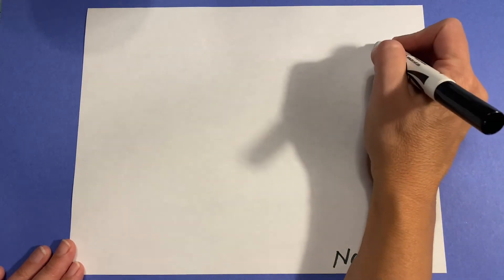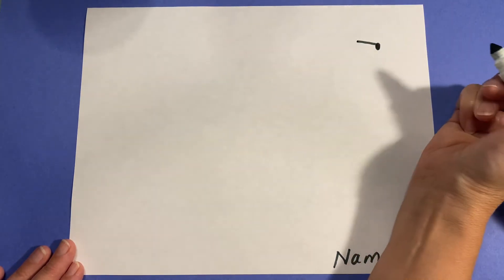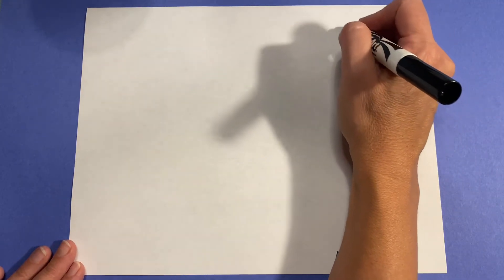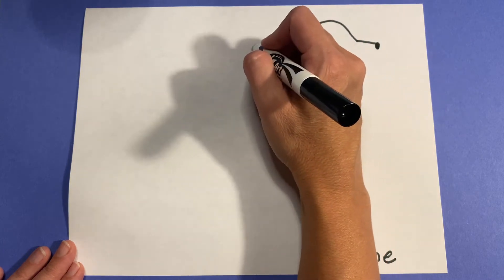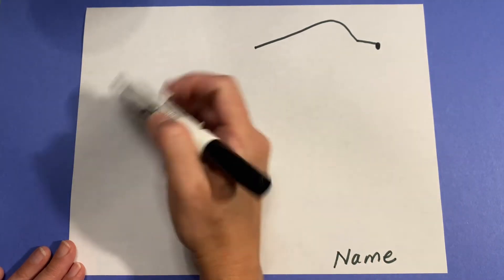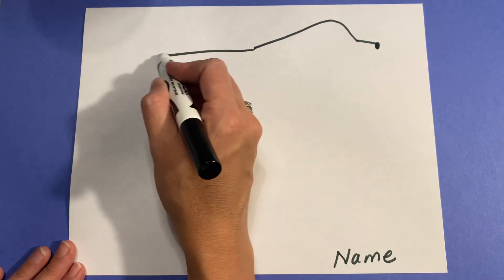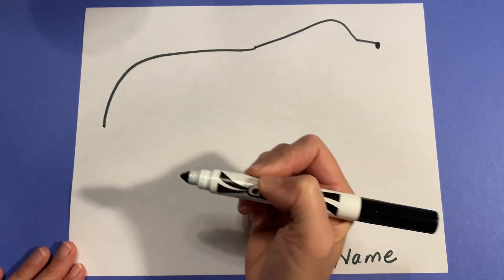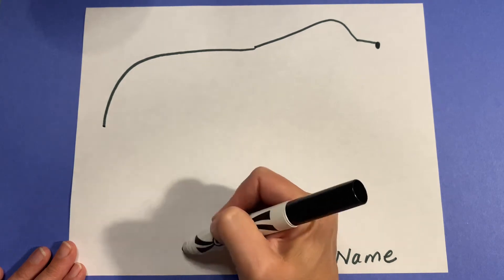And then draw a short line for the top of his muzzle and a bump for his head. I'm going to continue kind of like a rainbow shape for his back, and I'm going to continue that down for his leg.